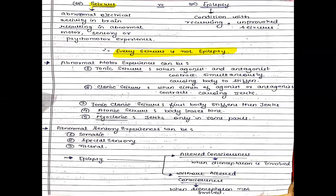So what is a seizure? Seizures are abnormal electrical activity in the brain. There is more activity in the brain under abnormal conditions. These are abnormal electrical activities in the brain which result in abnormal motor, sensory, or psychomotor experiences. This point is important — that such abnormal activity should produce some abnormal motor, sensory, or psychomotor experience.